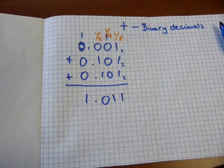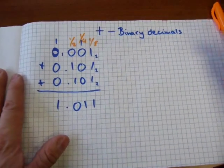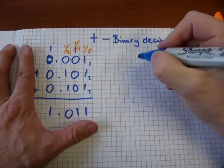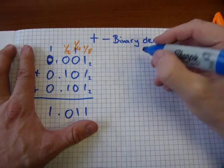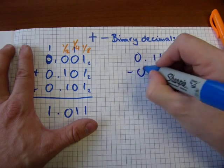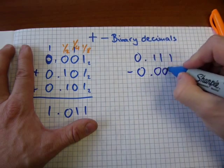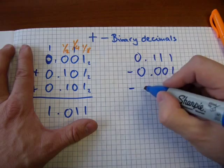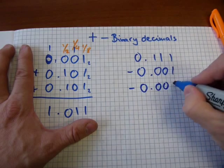Let's do a subtraction. How about 0.111 take away 0.001, take away, let's do the same, 0.01.